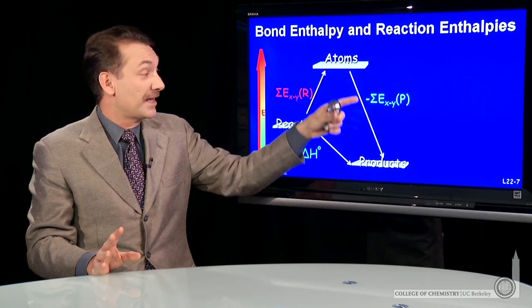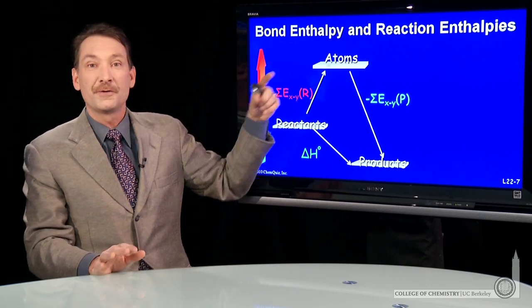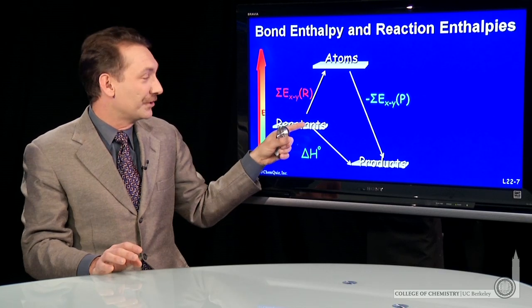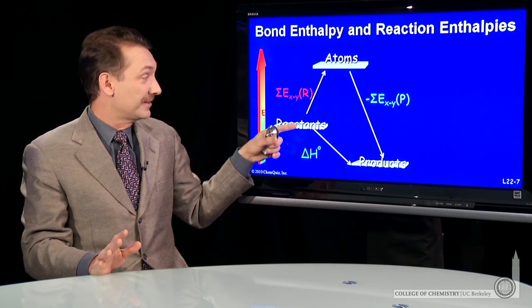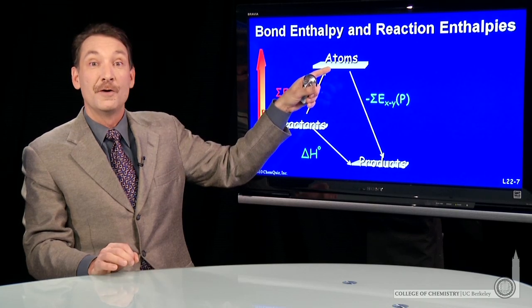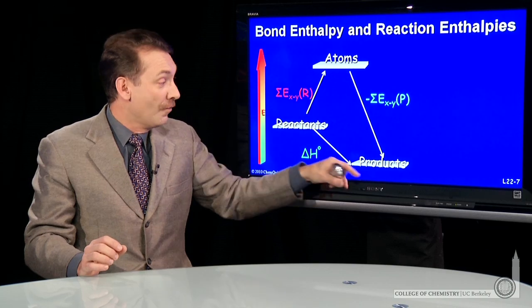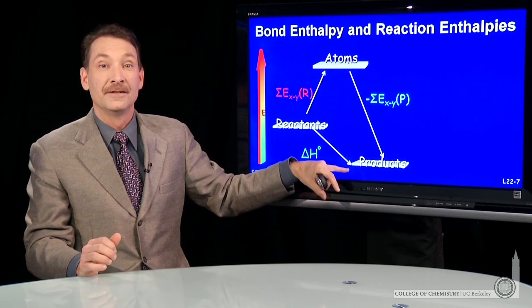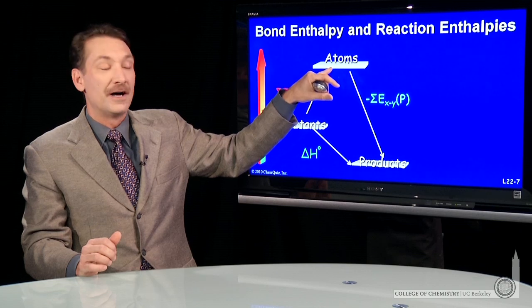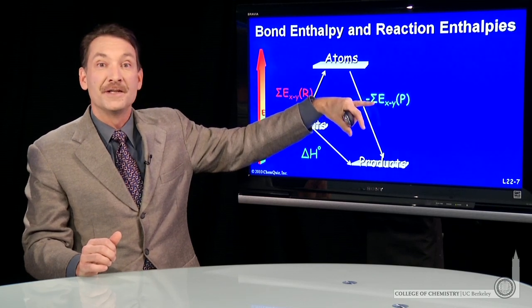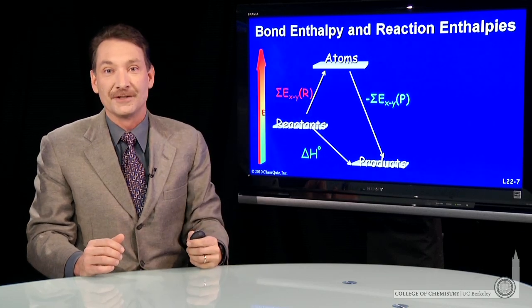Now, it just depends. Do I get more energy back when I make the product bonds than when I broke the reactant bonds? That will determine whether the overall reaction is exothermic. In this case, I put in some energy to break the reactant bonds, but the product bonds were more stable overall. So I got an overall release in energy. But you could imagine a case where you break the reactant bonds and form the product bonds, but you don't get as much energy back. And that would be an overall endothermic reaction.